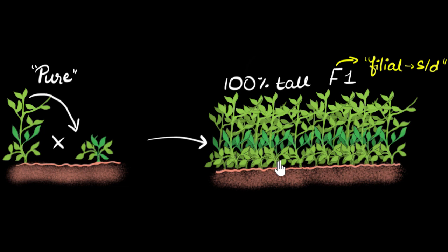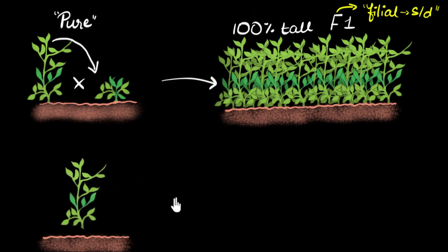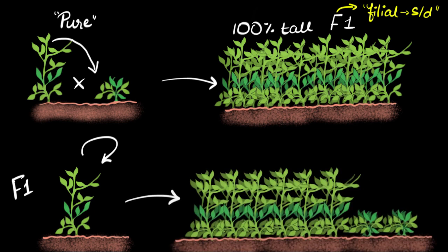To answer that question, he did another experiment — he didn't stop here. What he does next is take one of the F1 generation plants, which is tall, and self-pollinates it — to see what we get. Again, it'll grow seeds, and then he sows those seeds. What do you think we'll end up with? Well, surprise, surprise.